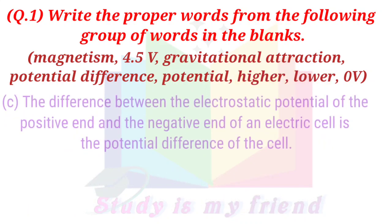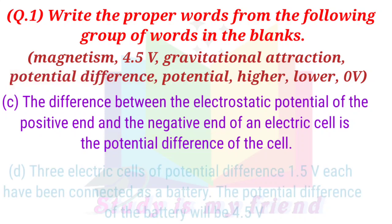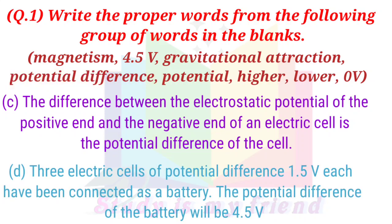C. The difference between the electrostatic potential of the positive end and the negative end of an electric cell is the potential difference of the cell. D. Three electric cells of potential difference 1.5V each have been connected as a battery. The potential difference of the battery will be 4.5V.